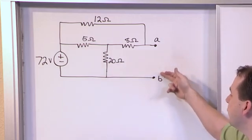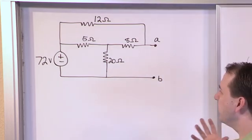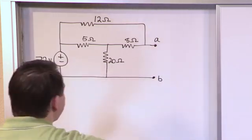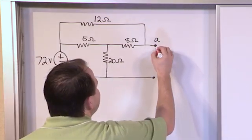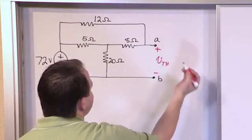Well, it's already open circuit here. We have two terminals here, A and B. There's nothing connected, so it's open circuit. So really what we're trying to find, when you really think about it, is the voltage between A and B is the Thevenin equivalent voltage.